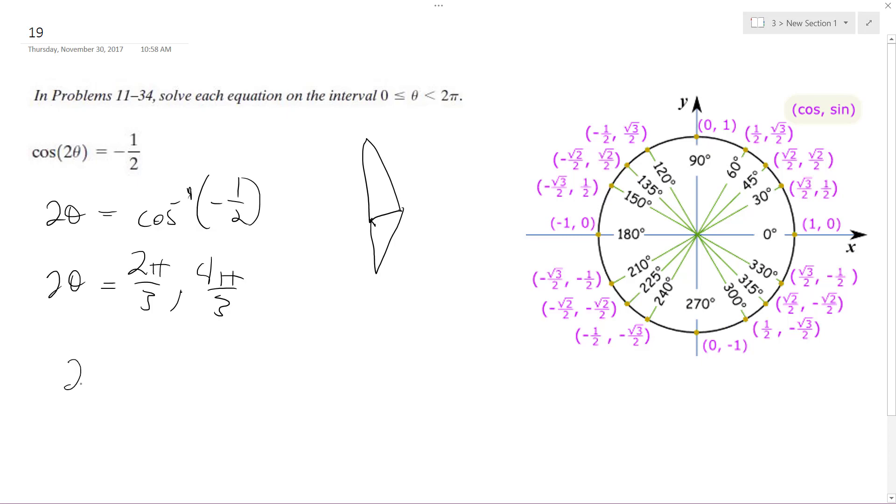So two theta equals two pi over three, and then two theta equals four pi over three.